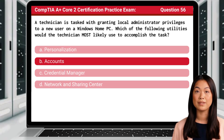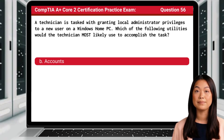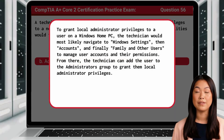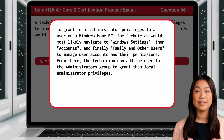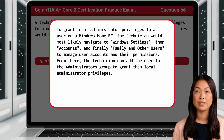The answer is B, Accounts. To grant local administrator privileges to a user on a Windows Home PC, the technician would most likely navigate to Windows Settings, then Accounts, and finally Family and Other Users to manage user accounts and their permissions. From there, the technician can add the user to the administrator's group to grant them local administrator privileges.